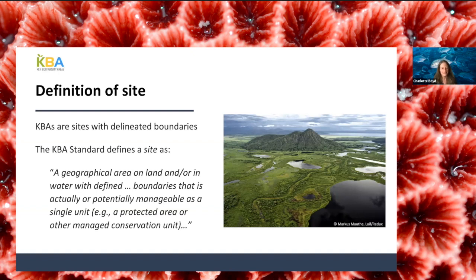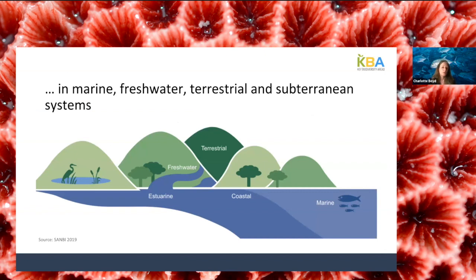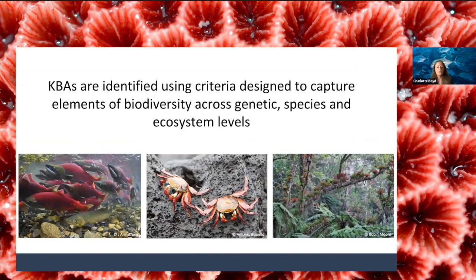If we want these sites to feed into conservation planning processes and be managed for conservation purposes, delineating sites that are actually or potentially manageable really helps. KBAs can be identified in marine, freshwater, terrestrial, and even subterranean systems, and they're identified using criteria capturing elements of biodiversity across genetic, species, and ecosystem levels, following the CBD's definition of biodiversity. Most previous approaches have been species-focused, but the KBA standard goes beyond that to include both species and ecosystem-based criteria.